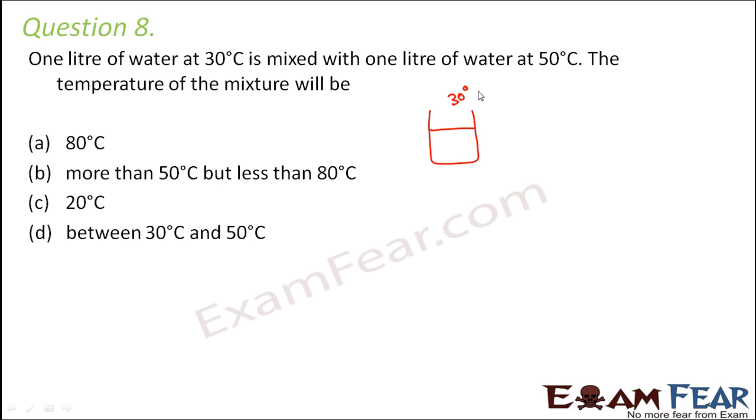You basically have one liter of water at 30 degrees Celsius and another liter of water at 50 degrees Celsius. When you mix both of them, heat transfer will happen from high temperature to lower temperature.